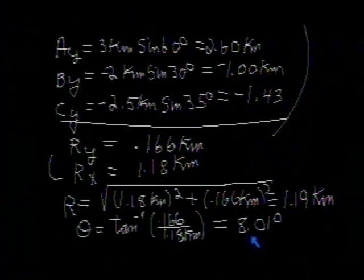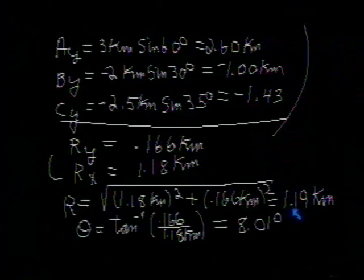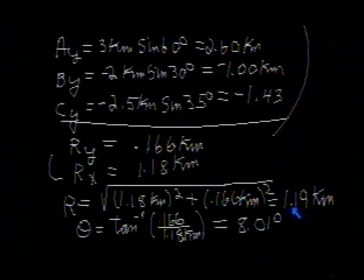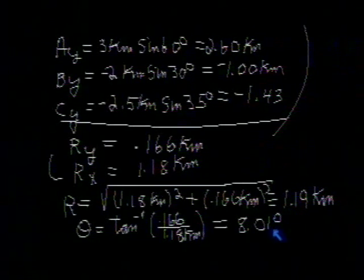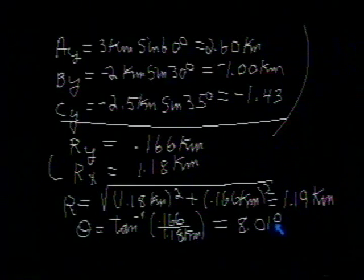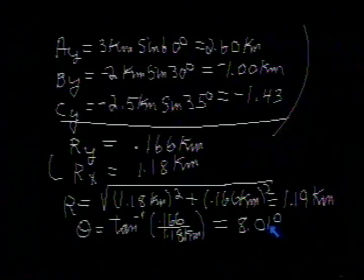You will notice that I've carried these solutions out to three significant figures, and I will do that consistently. I will assume that all of our data are accurate to three significant figures, unless it's stated otherwise. You may differ from the answers that I get in the last significant figure. That's not important. It simply represents some errors introduced by rounding on your calculator or on my calculator. All right, that's our problem.